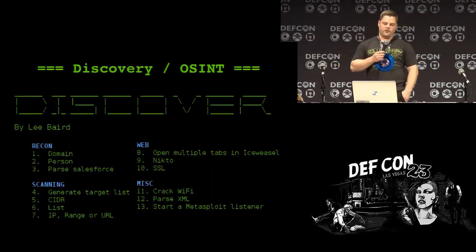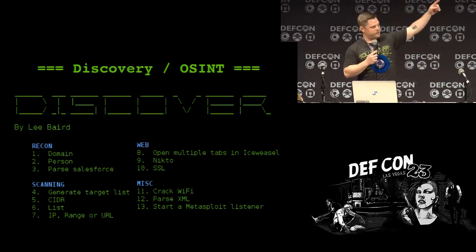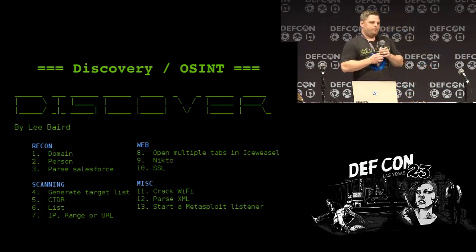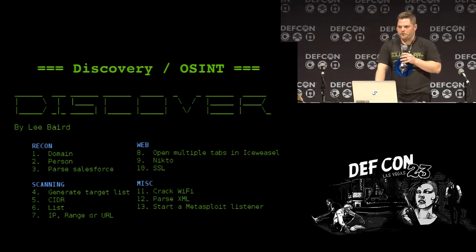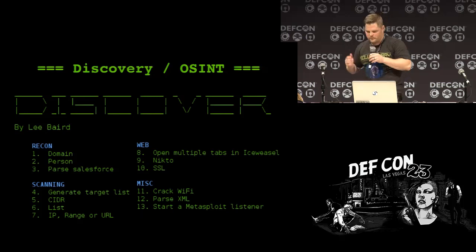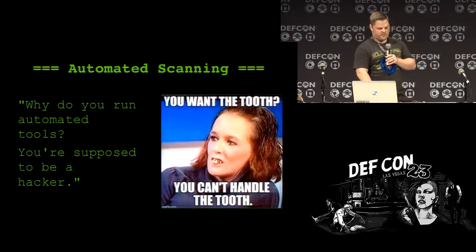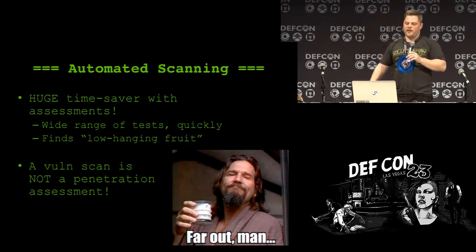There's a great OSINT tool by Lee Baird called Discover. You can see a few things it covers — the automation tool helps things go a little quicker. You might be asking: if you're a hacker, why are you running automated tools? According to Hollywood, the faster you type, the better hacker you are. But automated tools are great because they're a huge time saver with assessments — they cover a wide range of tests very quickly and help you find the low-hanging fruit.